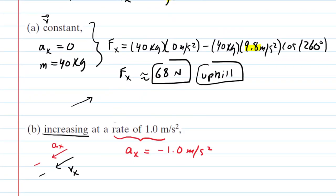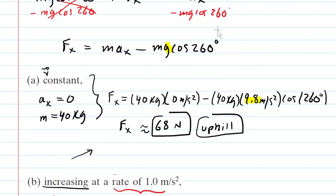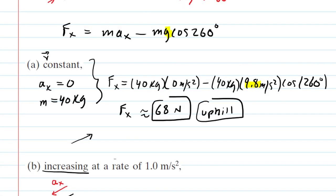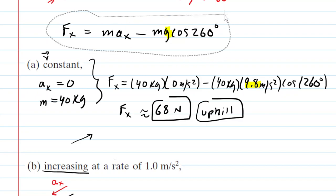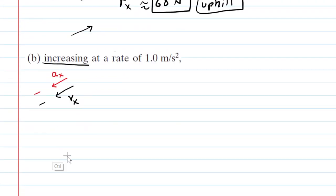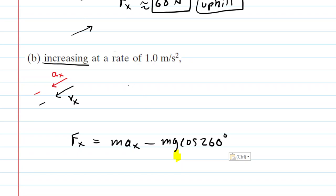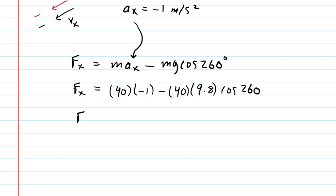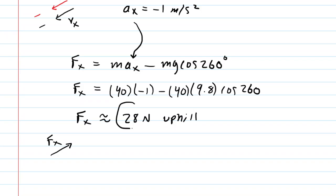We plug into the same Newton's second law equation developed earlier, this time using an acceleration of negative 1 meters per second squared along with the mass and value of g. Calculating f sub x gives approximately 28 newtons. It's still positive, so our assumption that f sub x was directed uphill was still correct. The direction of f sub x in Part b is uphill.